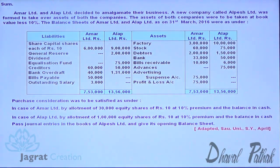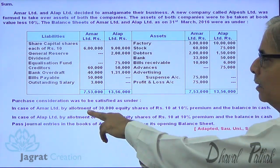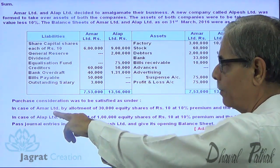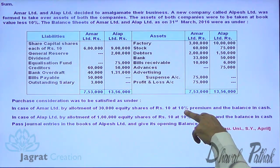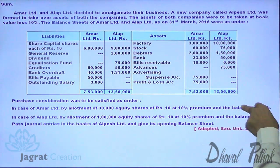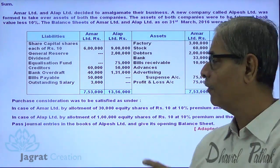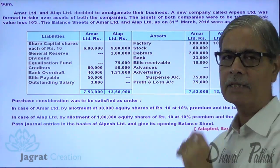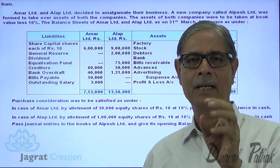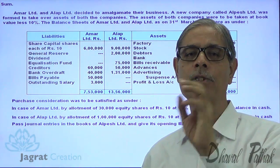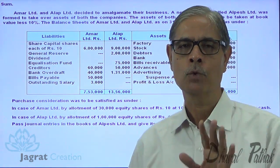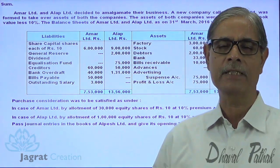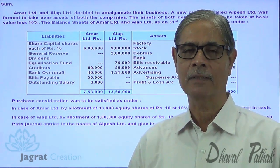Here in this sum, in case of Hummer Limited, by allotment of 30,000 equity shares of rupees 10 each at a premium, and the balance in cash — so the total payment is not prescribed. When the total payment is not prescribed and the balance cash paid is to be found out, the sum has to be solved by net asset method. So purchase price is to be determined by net asset method.